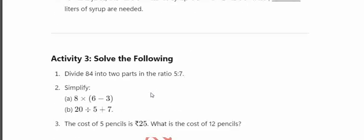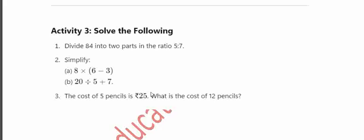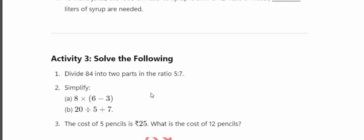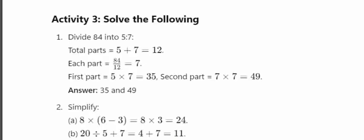Solve the following: Divide 84 into 2 parts in the ratio 5 is to 7. Total parts: 5 plus 7 equals 12. First part: 84 divided by 12 into 5 equals 35. Second part: 84 divided by 12 into 7 equals 49.